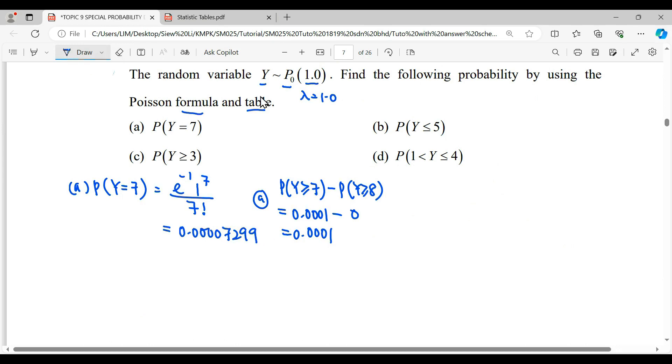For question (b), probability that Y is less than or equal to 5. To read the table we need to read more than or equal. Since we need less than or equal to 5, from the table we take 1 overall and minus more than or equal to 6. We minus what we don't want, which is more than or equal to 6. Therefore, we read from the table for 6, which is 0.0006.